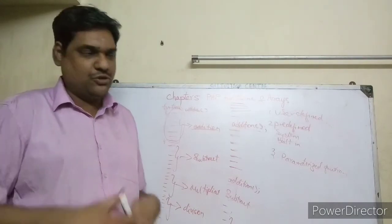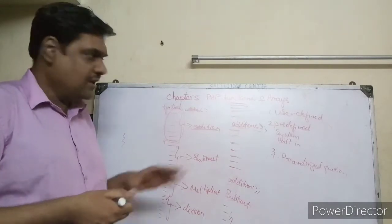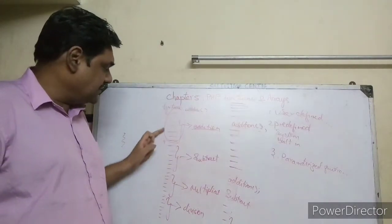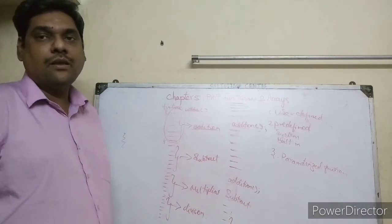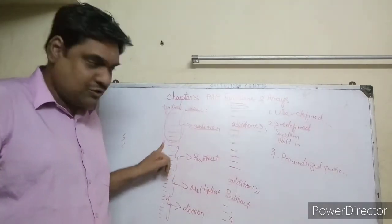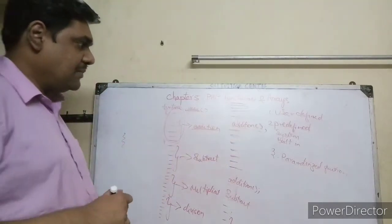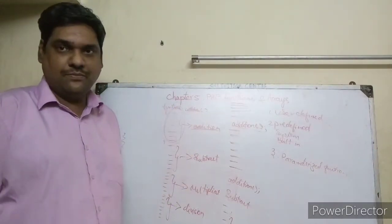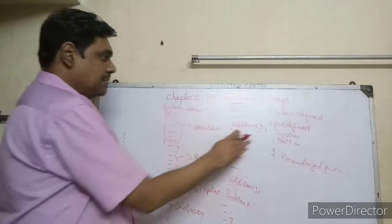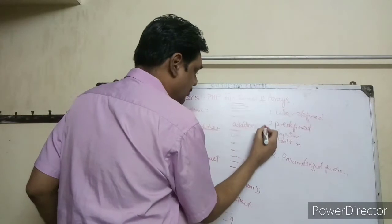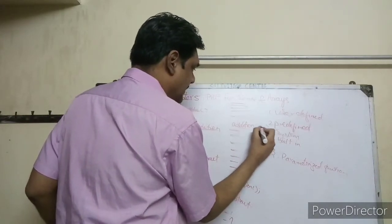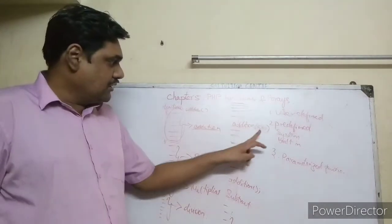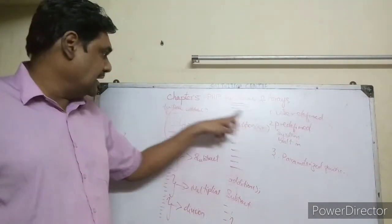Now, parameterized functions — when you call a function, the computer jumps from the call location to the function, executes all the statements, and then comes back. In a parameterized function, when you call the function you can give some values along with the call. For example, for an addition function you give two numbers like 5 and 10.